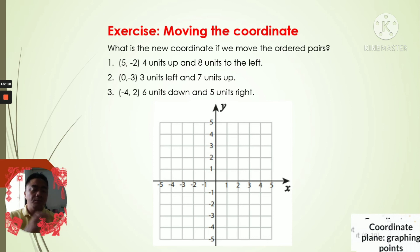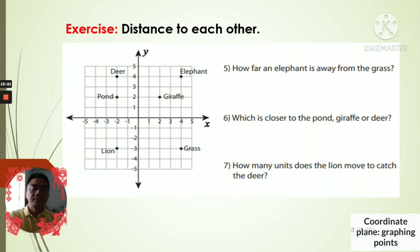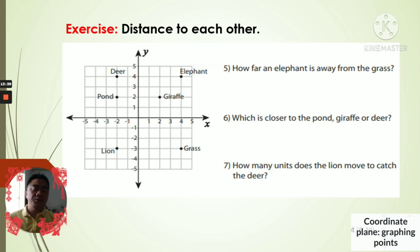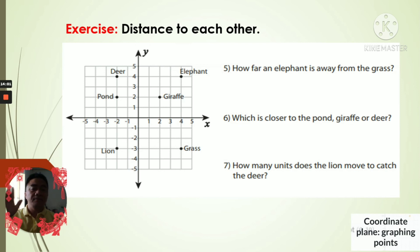We also have one more exercise where you give directions — like how far an elephant is from the grass — saying something like five units to the left or three units to the right. We have three questions as a continuation of our activity. If you have no further questions or clarifications, that is all for today. See you again next time, bye bye.